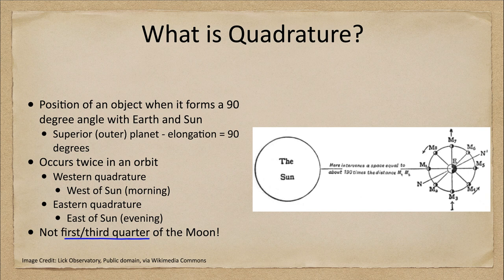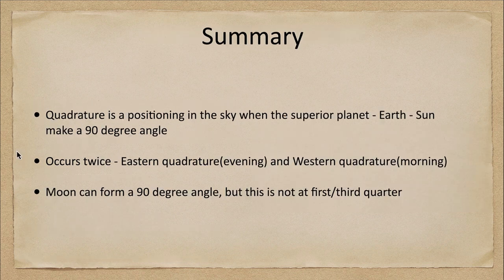So that concludes this discussion of quadrature and what that means in terms of positioning of a planet or the moon in the sky. So let's summarize here. What is quadrature?